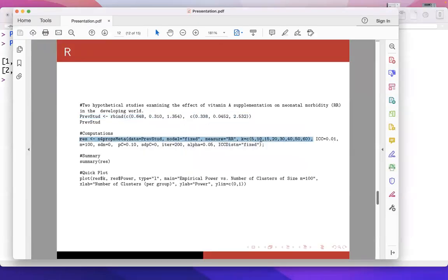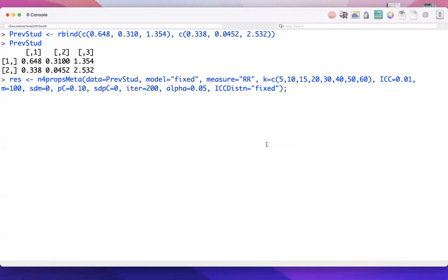Now, I'm going to start the results here first before I, and then I'll walk us through it because it does take a couple of minutes. So, the function is N4PROPSMETA. The data is the matrix of previous studies that we provide, which again corresponds to the relative risk and the lower and upper 95% confidence intervals. Model equals fixed corresponds to the fixed effects meta-analysis. The measure here is the relative risk.